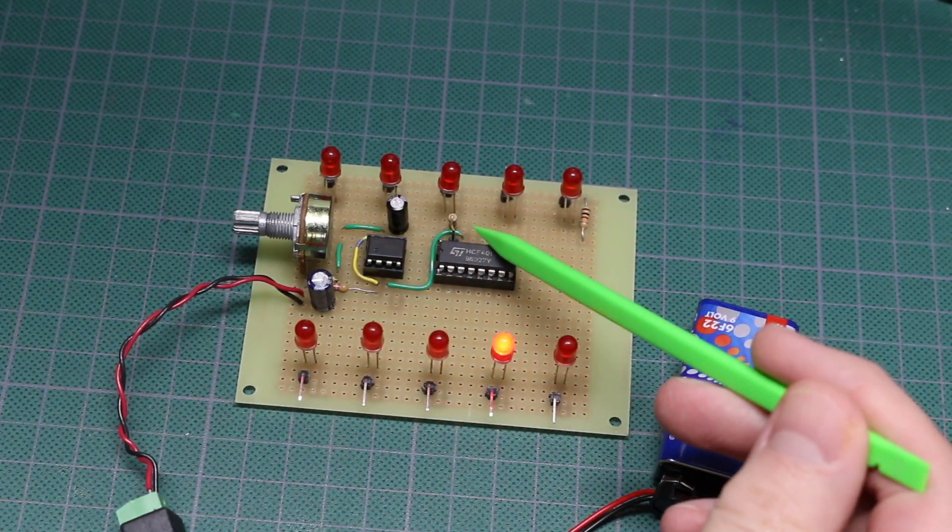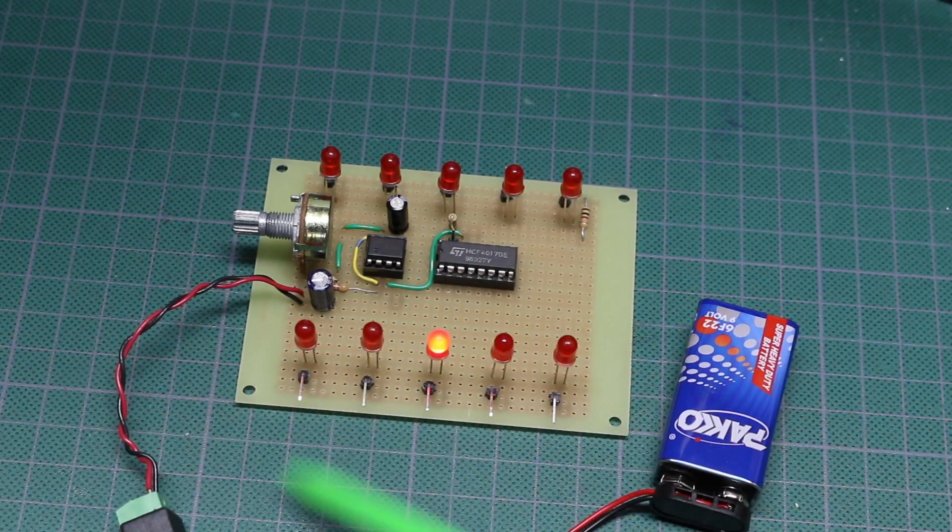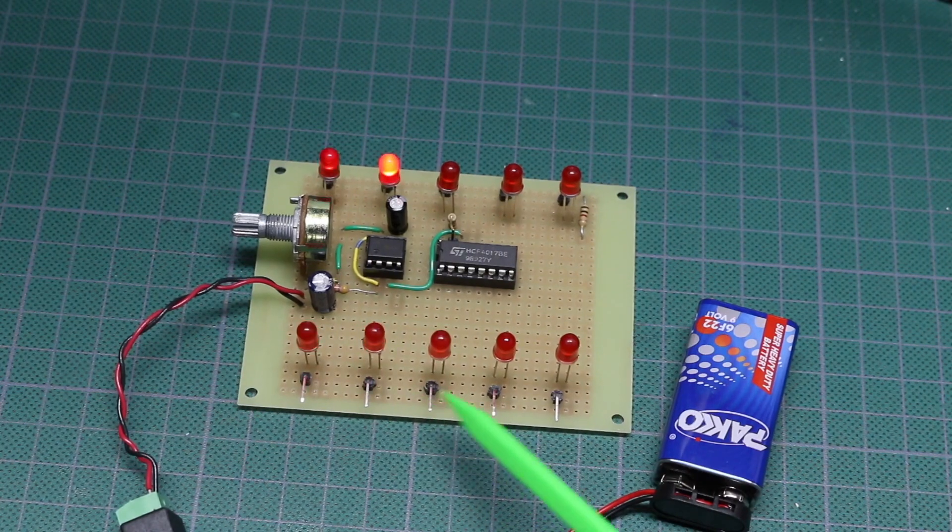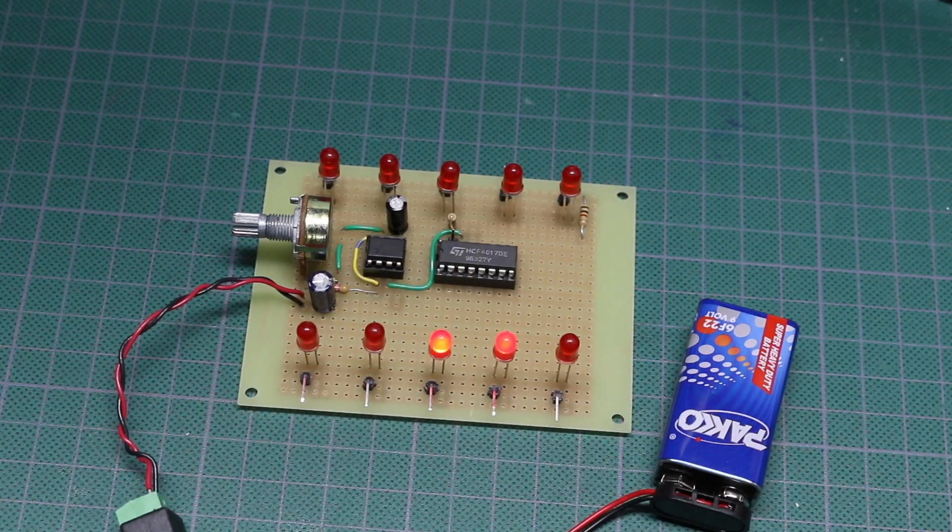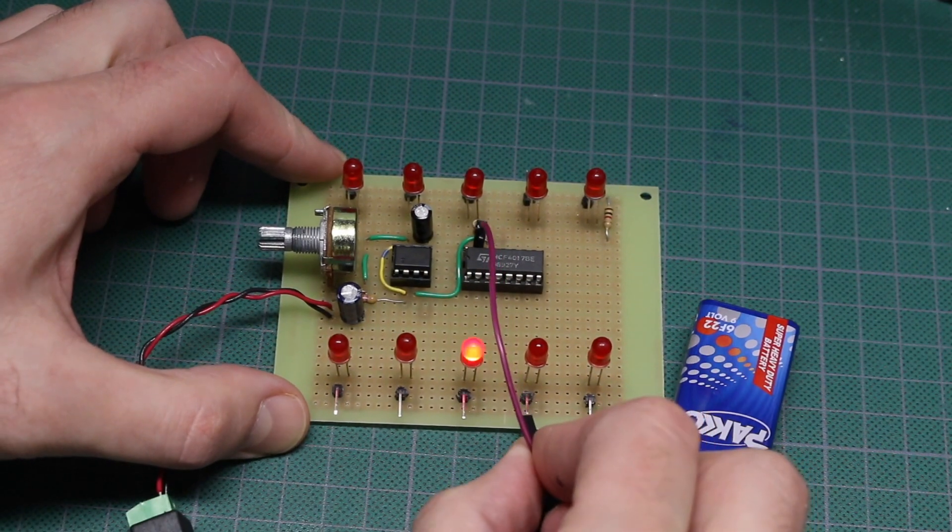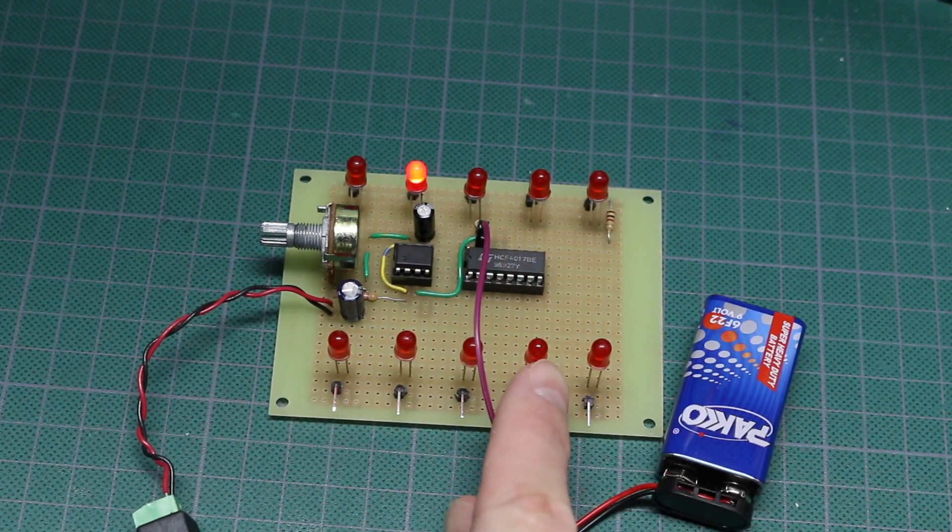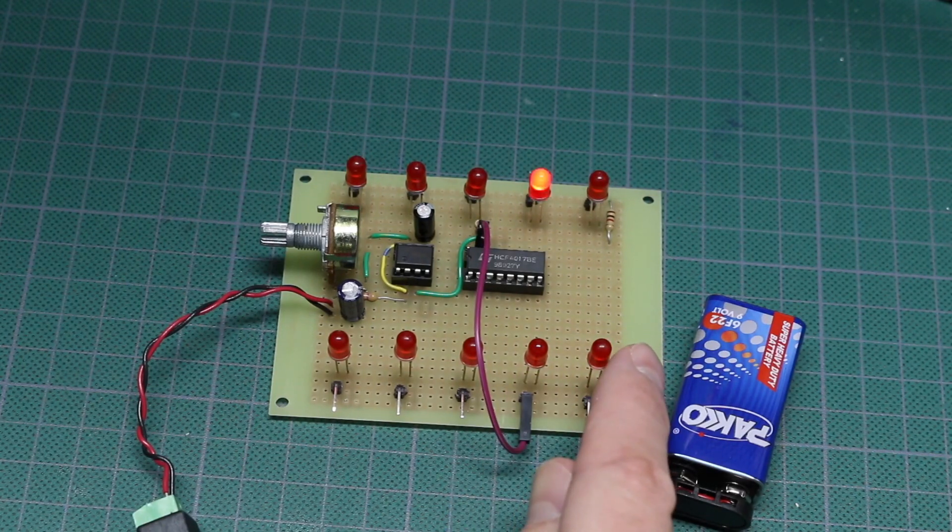And I have a 0.1 inch post right here for reset, and a right angled 0.1 inch post on every 4017 output. So if I want to reset this before it gets all the way to the end, I just put the reset pin on the LED just past the one I want to be the end of the chain.